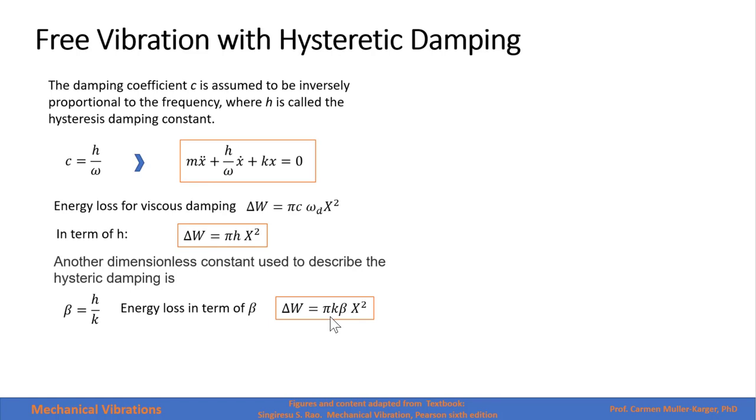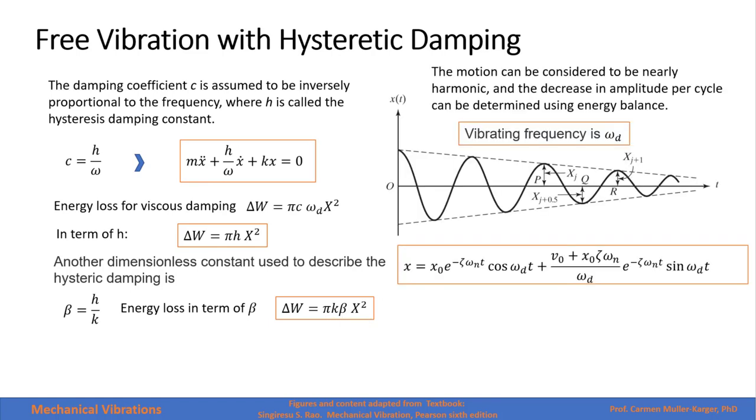And we can write the energy loss in terms of β, which will be πKβ amplitude squared. The motion can be considered to be nearly harmonic, and the decrease in amplitude per cycle can be determined using energy balance.